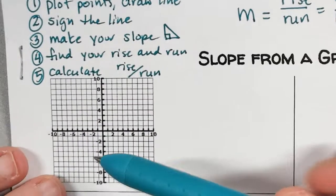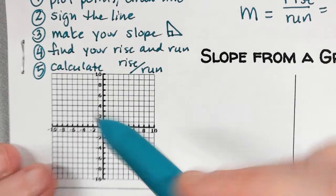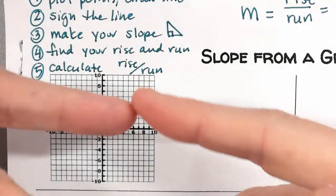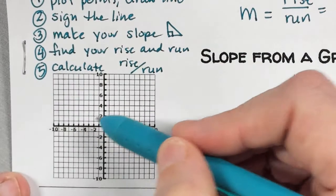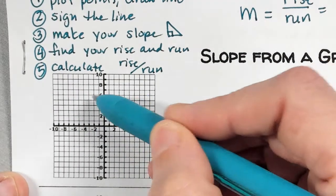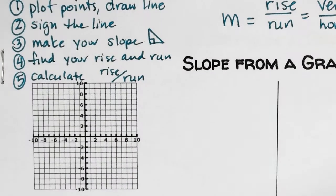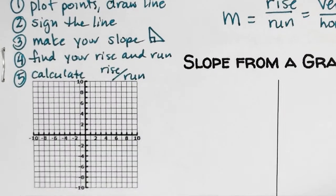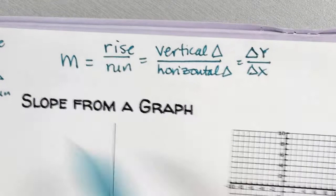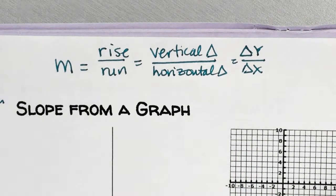Instead of doing the little calculation with the carrots, I'm actually counting the vertical change and counting the horizontal change, then putting them in a fraction. So it's basically the same thing — just visual instead of mathematical.